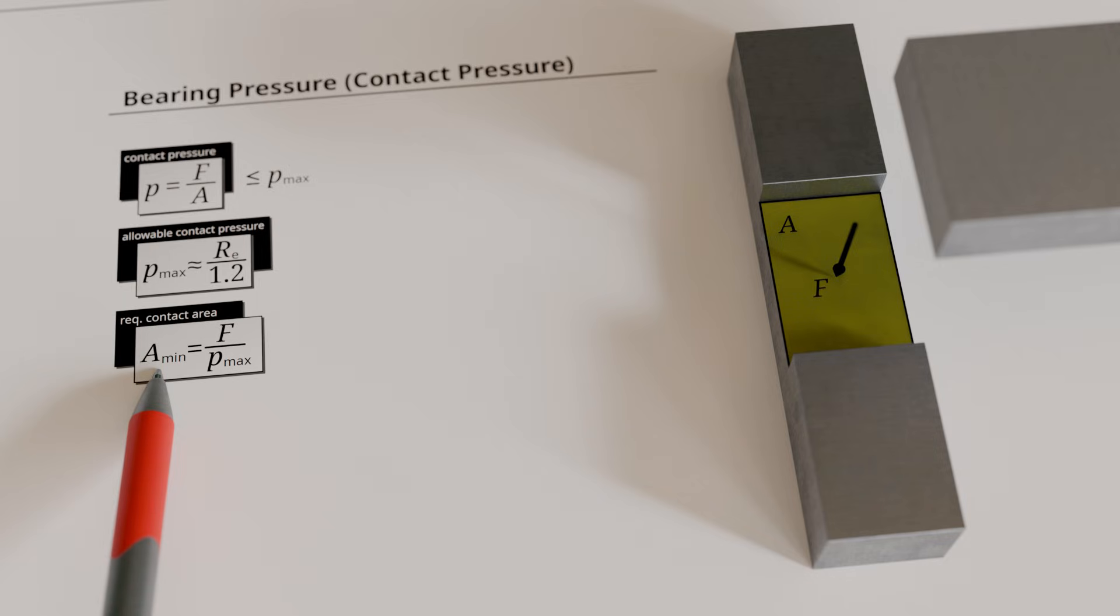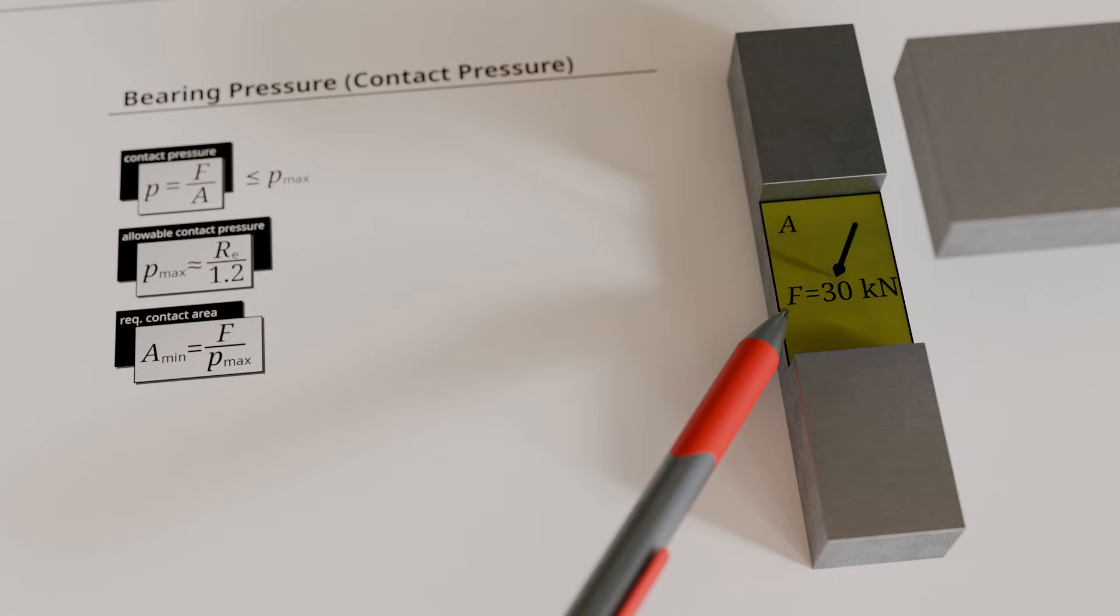Let us consider the illustrated example in which the upper component presses onto the contact surface of a recess with a constant force of 30 kN. The recess has a width of 20 mm.